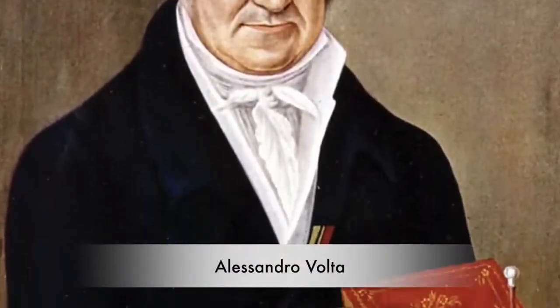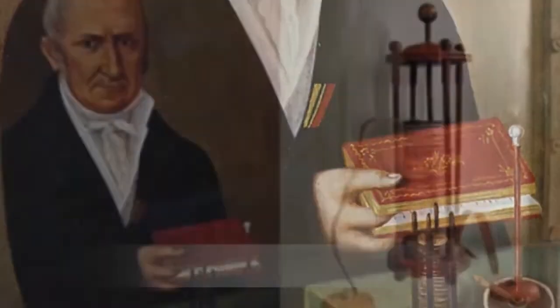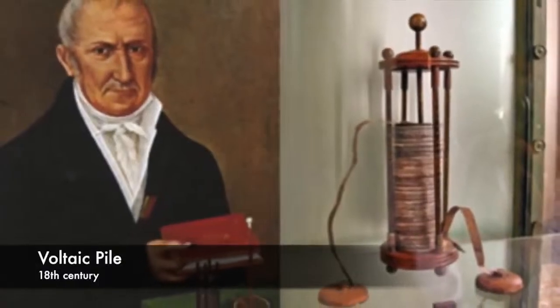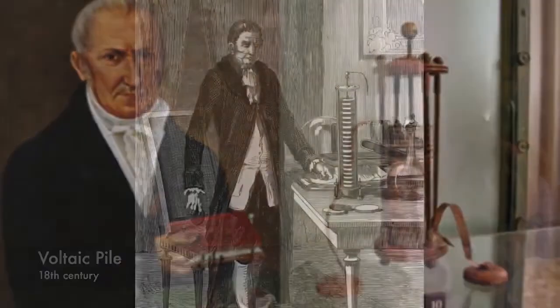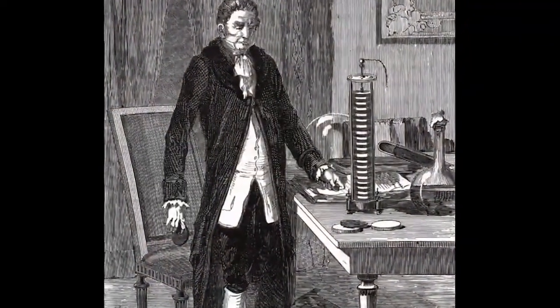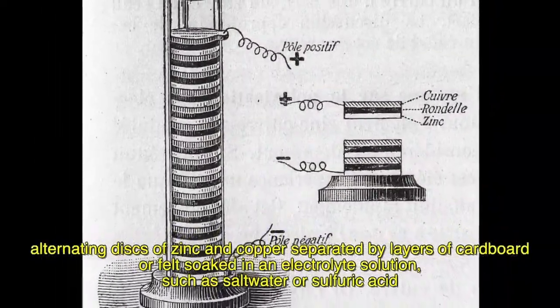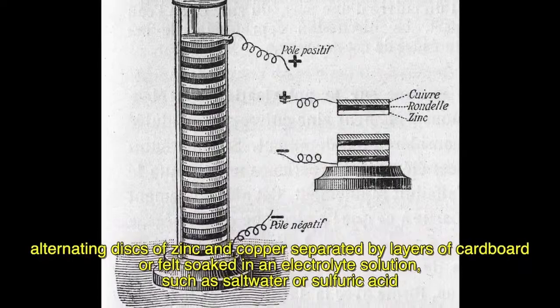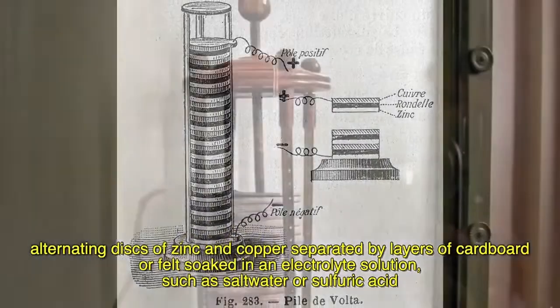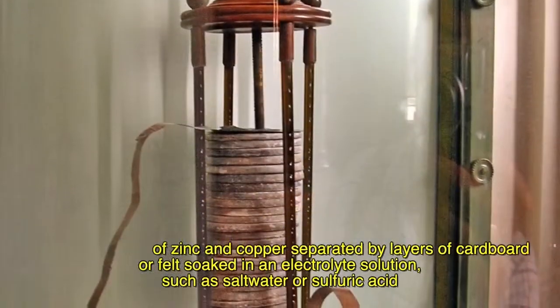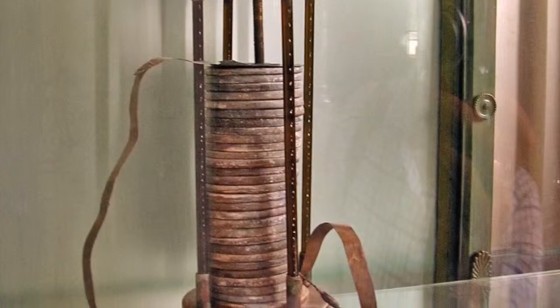Similarly, Alessandro Volta's invention of the voltaic pile in the late 18th century paved the way for modern battery technology. It consists of alternating disks of zinc and copper separated by layers of cardboard or felt soaked in an electrolyte solution, such as salt water or sulfuric acid. The disks are arranged in a stack, with each zinc disk connected to a copper disk through the electrolyte-soaked separator.